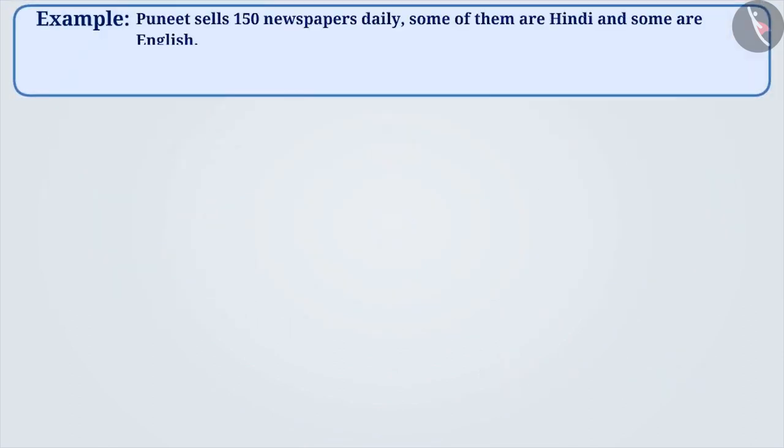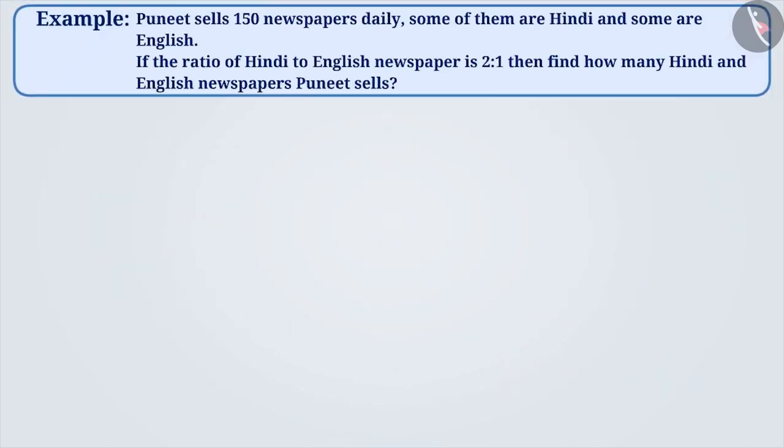Next example. Puneet sells 150 newspapers daily, out of which some are Hindi and some are English. If the ratio of Hindi newspapers to English newspapers is 2 is to 1, then find out how many Hindi and English newspapers Puneet sells.